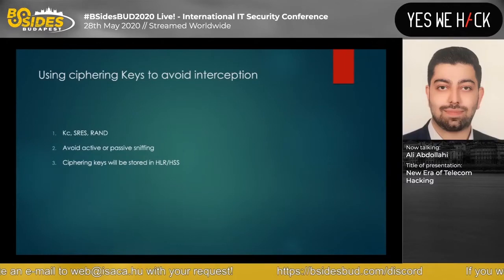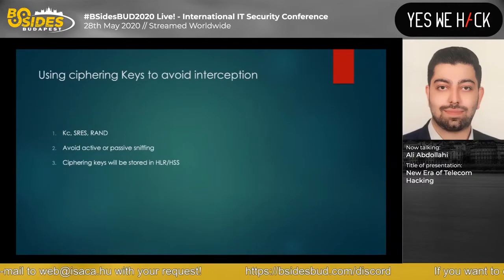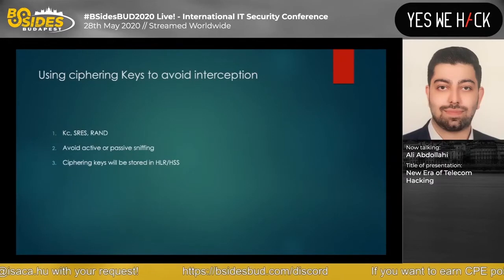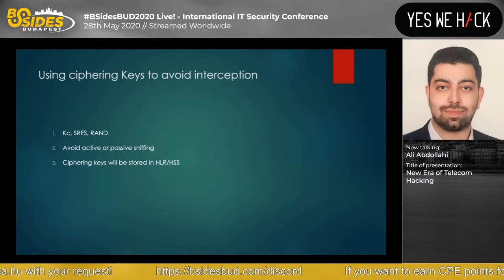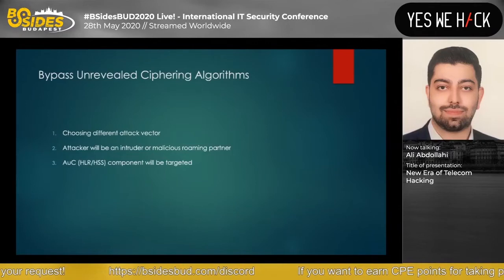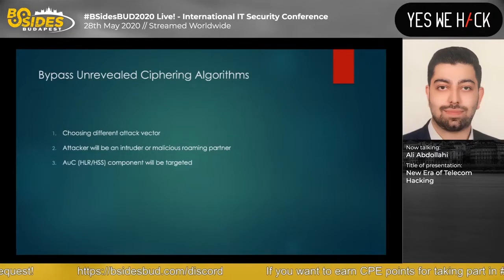There are types of ciphering keys like KC, SRES, and RAND (random number) in Radio Access Networks, which harden the radio network to avoid active sniffing. They are always stored in the HLR or HSS in the core network. The HSS or HLR, as a subscriber database, has a component called AUC (Authentication Center), which is responsible for ciphering and authentication procedures.